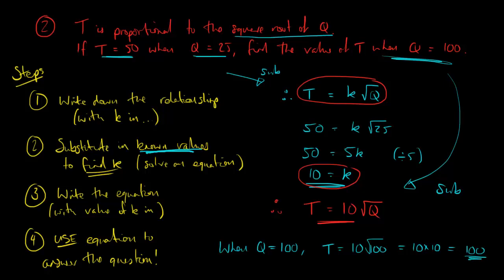So just to finish by summing up, you've always got these four steps. Write down the relationship. It'll have k in it. Then you put the values that you know in to work out what k is. Write down the equation, and then use it to solve the question. That's all.